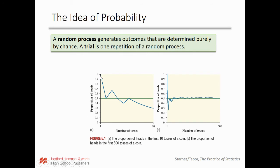I flip the coin the very first time and it lands heads, so I have 100% heads. I flip again and get tails, so now I'm one for two, or 50%. I flip again and land heads — two out of three, bringing me up to 66%. Then tails drops me back to 50%, another tails brings me to 40%, then heads brings me back up to three out of six.